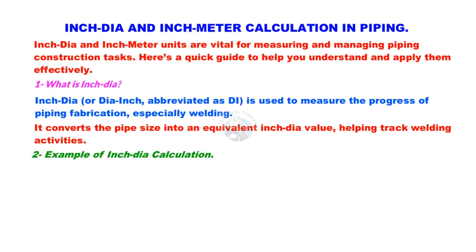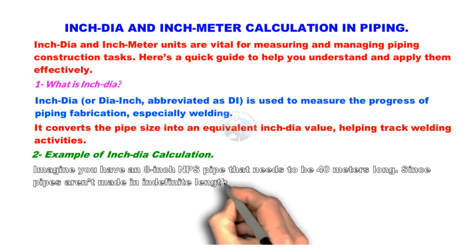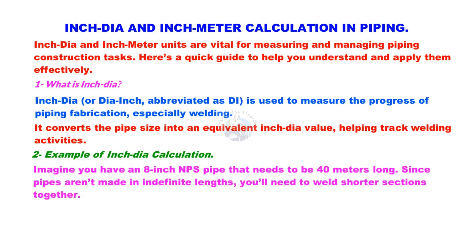Let us try some examples. Imagine that you have an 8-inch NPS pipe that needs to be 40 meters long. Since pipes aren't made in indefinite lengths, you'll need to weld shorter sections together.